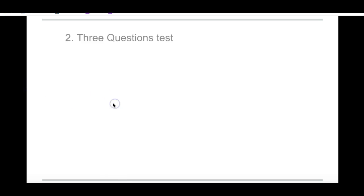This video is to talk about the last way to determine type of elasticity. In the last video, I explained how to use the total revenue test. That's good for when you actually have a graph or when you actually have numbers. But what if you don't have any numbers? Then you're going to use what we call the three questions test. This is number two because number one was the total revenue test.